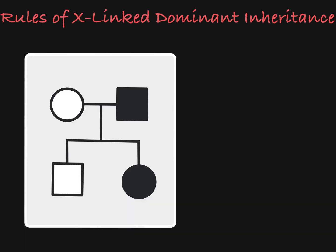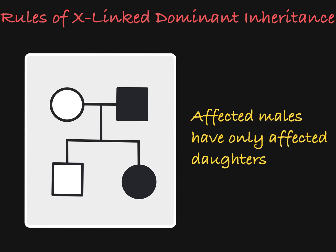Let's take a look at some pedigrees to learn the rules of X-linked dominant inheritance. First, if you have an affected male, all of his female offspring must also be affected. An affected male has the dominant X-linked allele, and he passes it on to all of his female children.